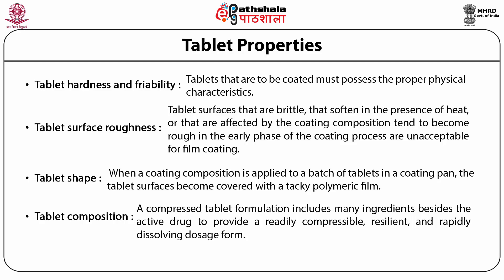The more convex the surface is, the fewer difficulties will be encountered with tablet agglomeration. The fourth parameter is tablet composition. A compressed tablet formulation includes many ingredients beside the active drug. The resulting surface properties depend on the chemical nature of the ingredients utilized. For the coating to adhere to the tablet, the coating composition must wet the surface. Hydrophobic tablet surfaces are difficult to coat with aqueous-based coatings, but the coating formulation can be adjusted through the addition of appropriate surfactants to reduce surface tension and improve coating adhesion.